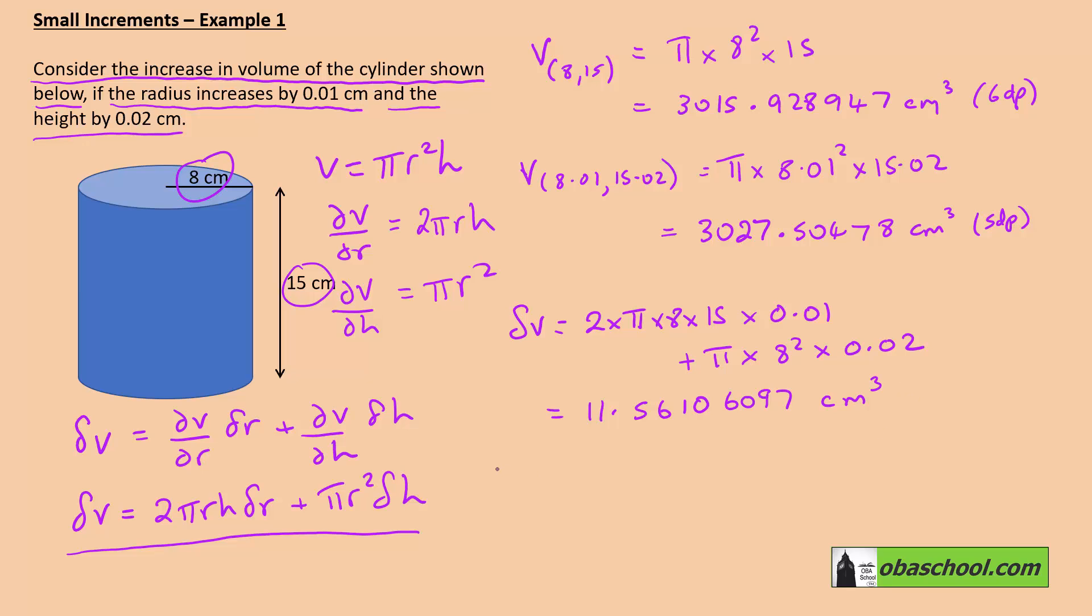And that means that if we do V plus delta V, we get 3027.490008. And we can compare the true figure here with the estimate using calculus.